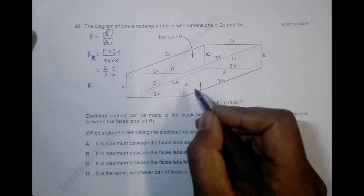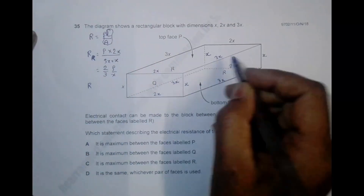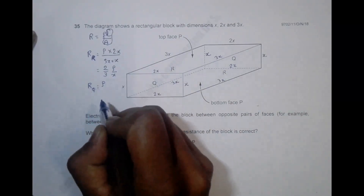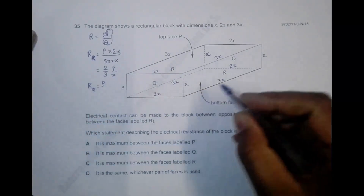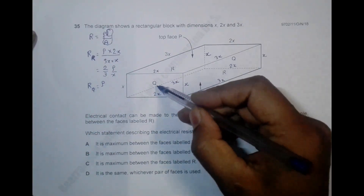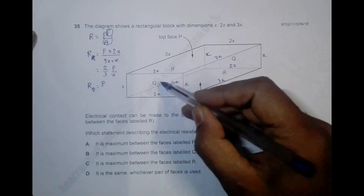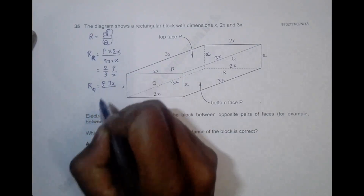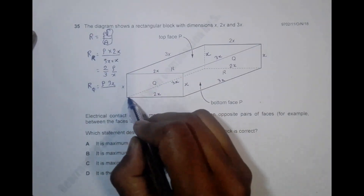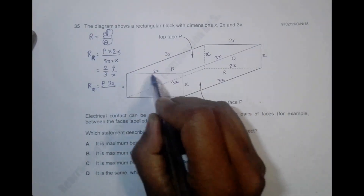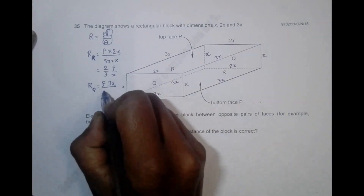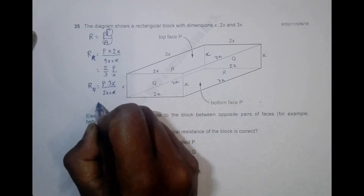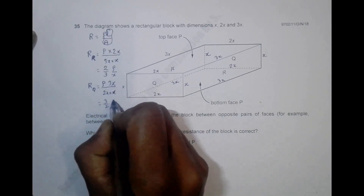The resistance across the Q faces: the length from one Q face to the other is 3x, and the cross-sectional area is 2x × x = 2x². So resistance across Q = ρ × 3x / 2x² = 3ρ/2x.